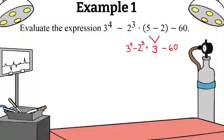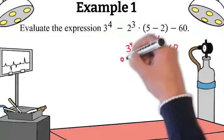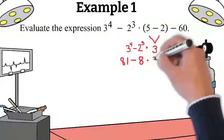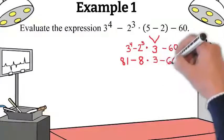Now that we have the parentheses done, let's do exponents. Three to the fourth power is 81, and two to the third power is 8. Again, write out the rest of the expression.